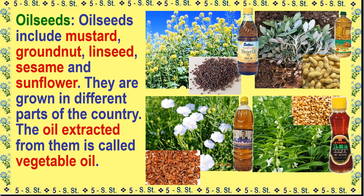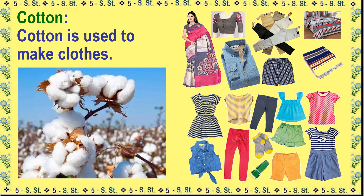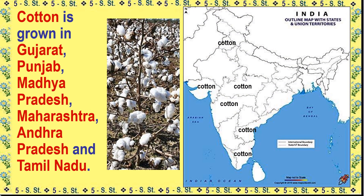Oil seeds include mustard, groundnut, linseed, sesame, and sunflower. They are grown in different parts of the country, and the oil extracted from them is called vegetable oil. Cotton is used to make clothes and is grown in Gujarat, Punjab, Madhya Pradesh, Maharashtra, Andhra Pradesh, and Tamil Nadu.